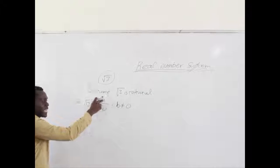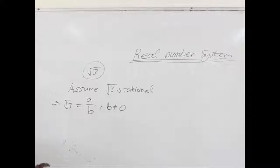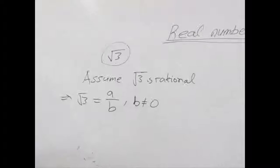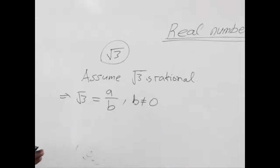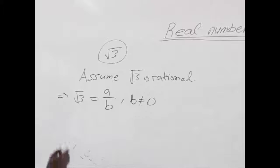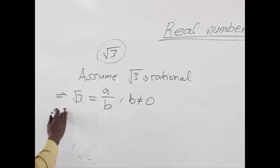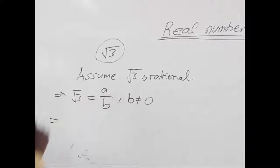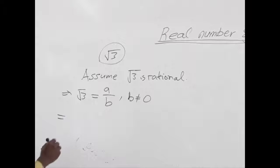A is a whole number, B is a whole number, and they are in their lowest terms — they cannot be further simplified. To begin with, let's try squaring both sides so that we can remove the square root and see what happens.